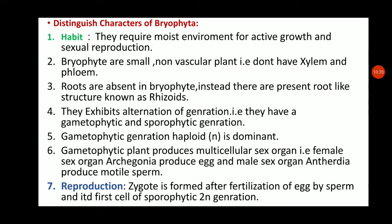In reproduction, a zygote is formed. The male reproductive organ is antheridia and the female is archegonia, which contains the egg. Antheridia contain antherozoids. During favorable conditions when moisture and water are available — water being necessary for fertilization — the antherozoids swim through the water current and reach the archegonia.